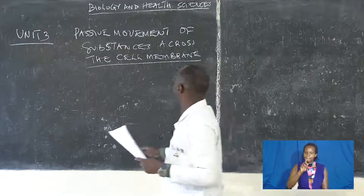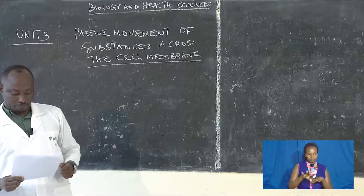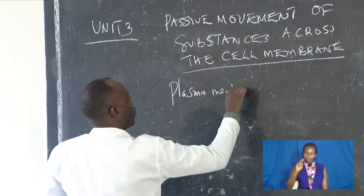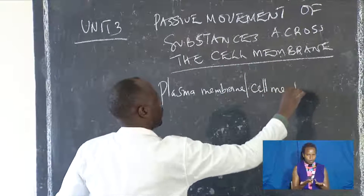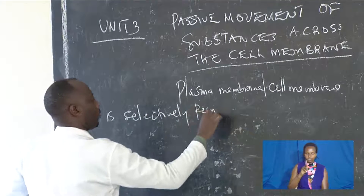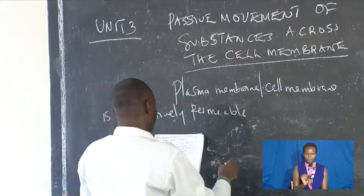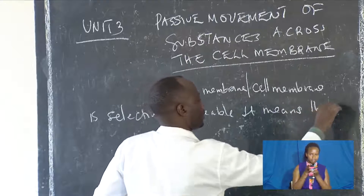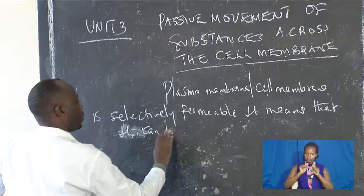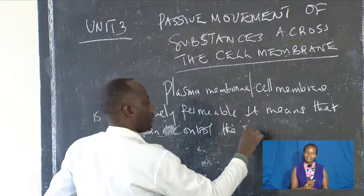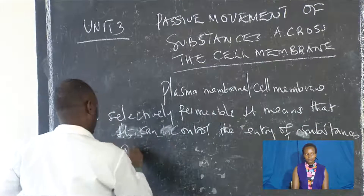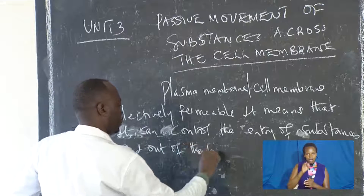When I talk about the plasma membrane — also called the cell membrane — the plasma membrane is called a selectively permeable membrane. If I say selectively permeable, it means that it can control the entry of substances into and out of the cell.